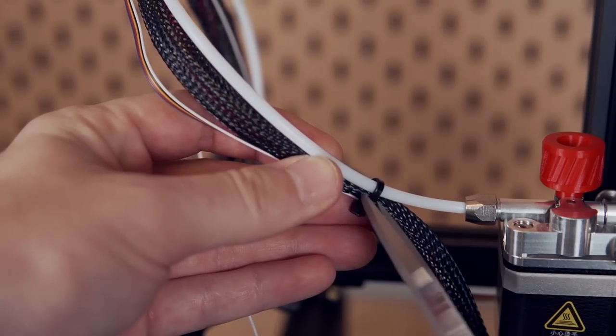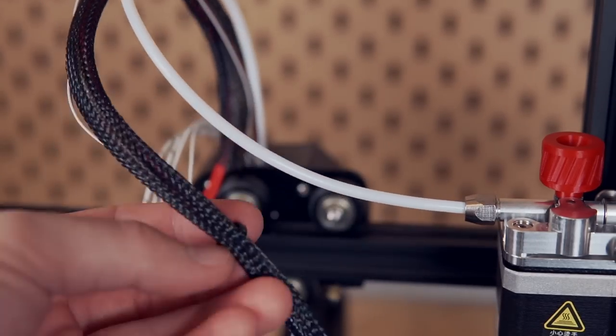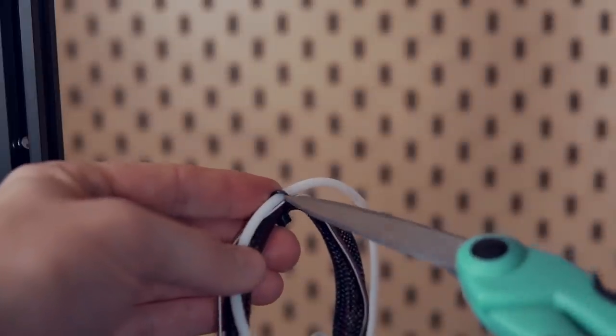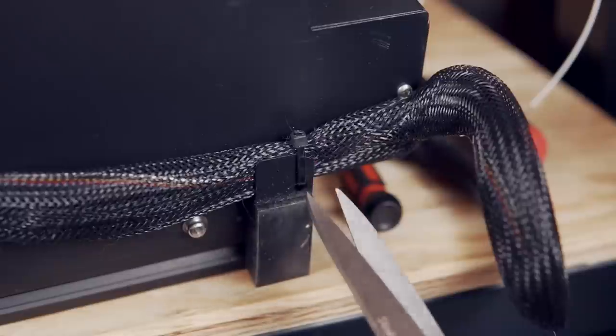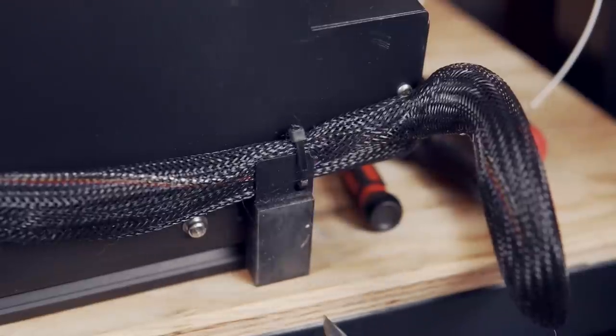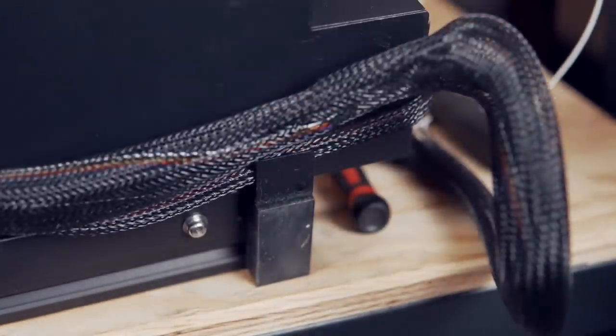Once secured, we'll need to remove any and all zip ties on the wiring harness because we are going to be moving on to the wiring portion. There's likely a couple on the wire harness itself and there's one on the back bottom side of the machine that has it bolted to the frame. You'll also need to remove that one.